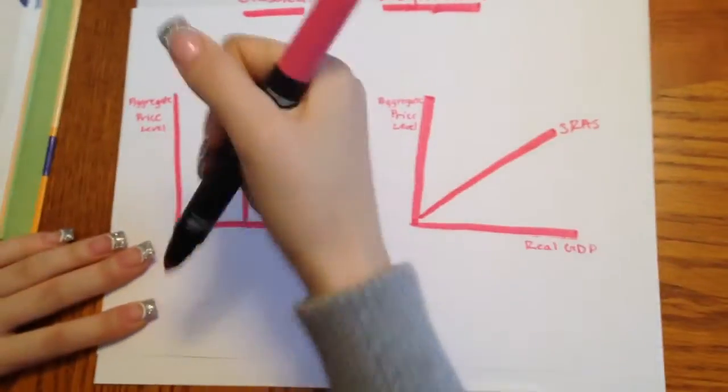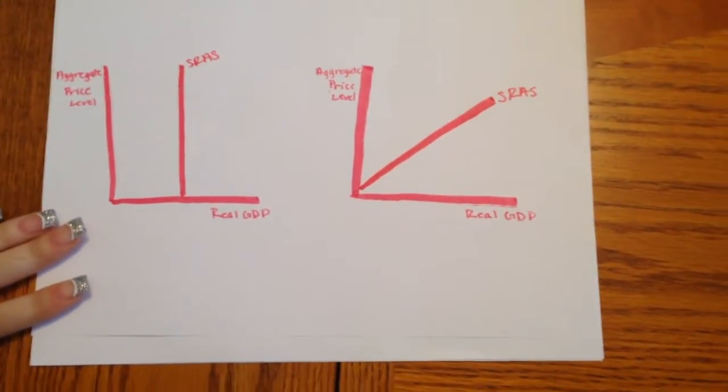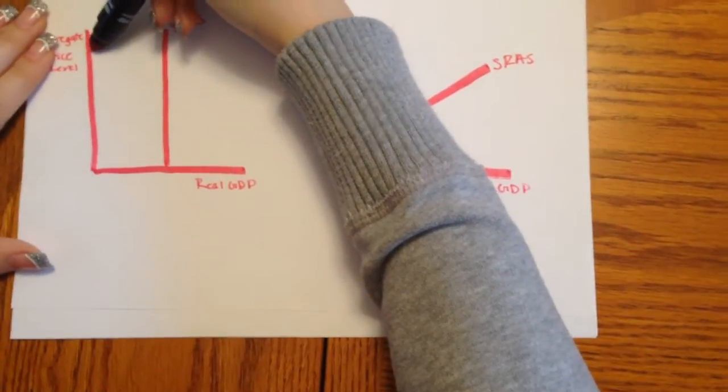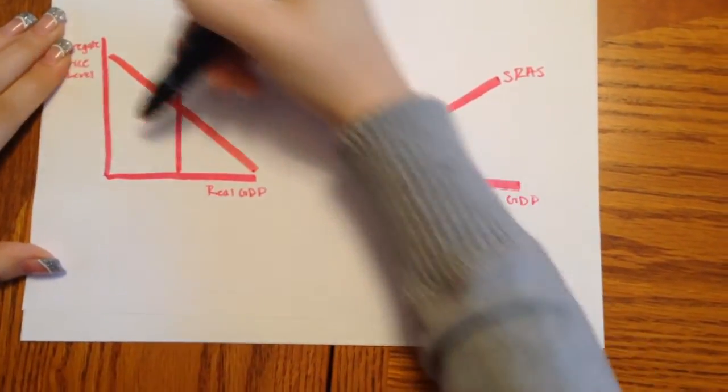And basically what this implies is that in the Classical model, when aggregate demand shifts to the left or to the right, output stays the same.